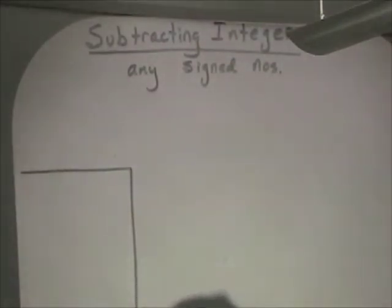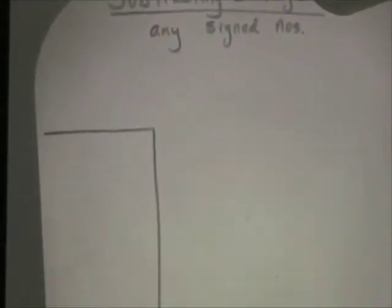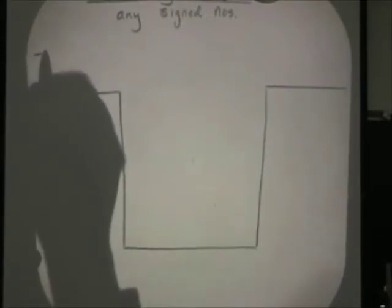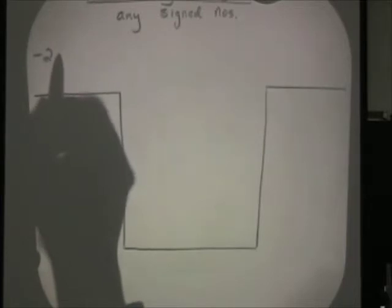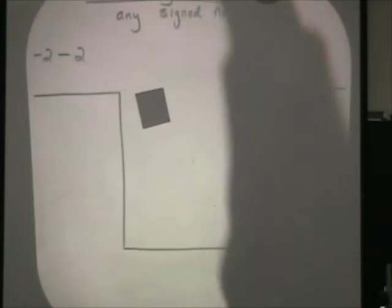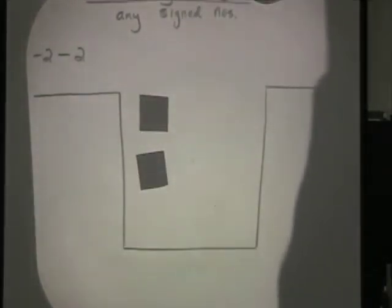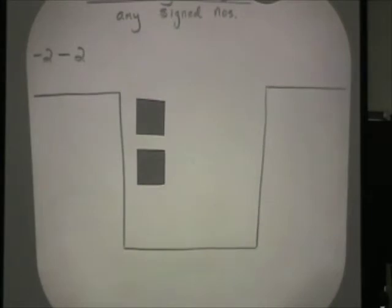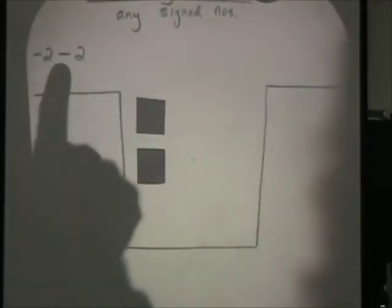It's a good idea to start once again with the integer pit. We'll draw a little pit here and start placing things in it to illustrate a subtraction problem. We're going to put some stuff in this pit to represent the problem negative 2 take away positive 2. Let's go ahead and place two negatives inside — remember, the clear ones are the positives.